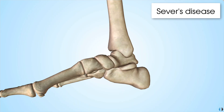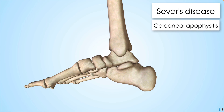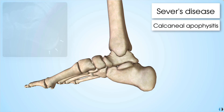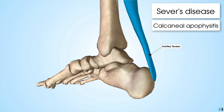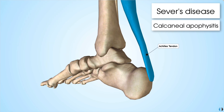Sever's disease, or calcaneal apophysitis, is a growth plate injury. In Sever's, the growth plate of the posterior calcaneus bone becomes inflamed and irritated due to repeated pulling or traction from the Achilles tendon. This repeated traction causes swelling, pain, and inflammation of the posterior calcaneus.